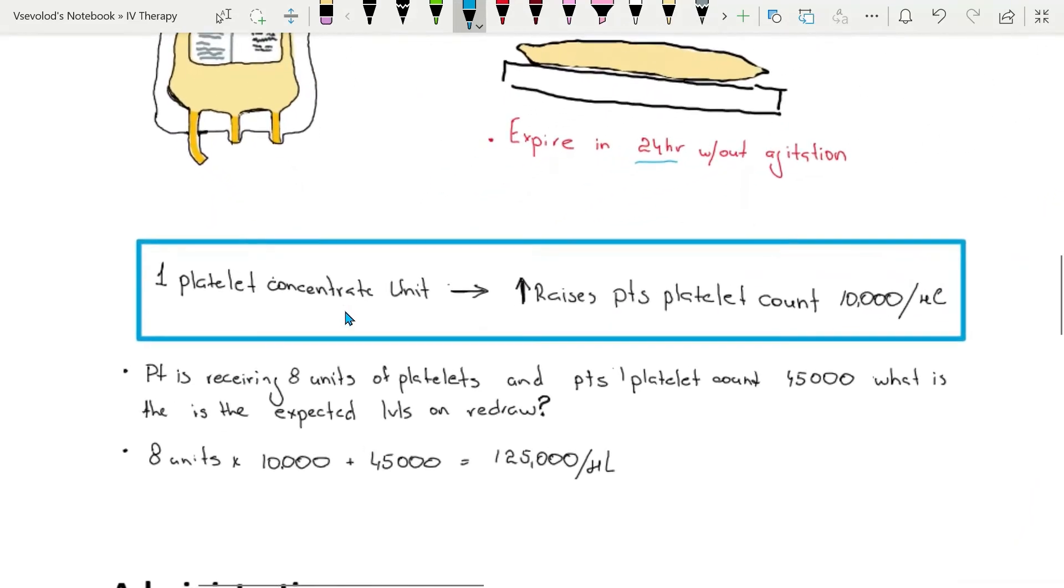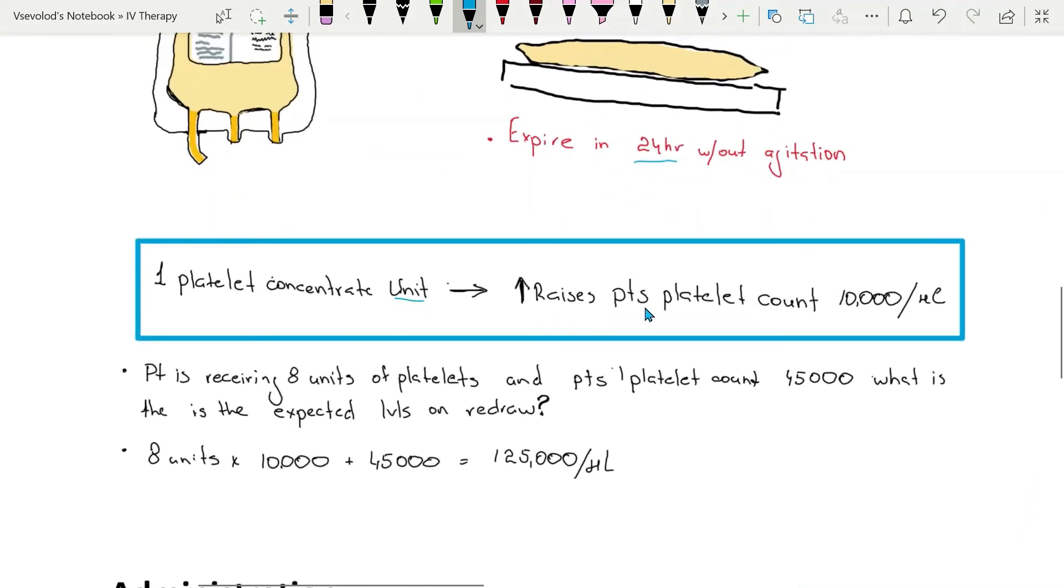Important thing to mention: one platelet concentrate will raise the patient's platelet count by 10,000 platelets per microliter.